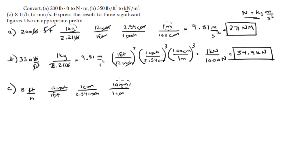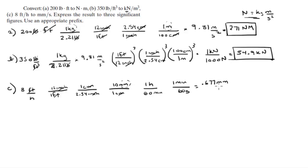Now convert the hour to seconds: in one hour there are 60 minutes, and in one minute there are 60 seconds. Plugging all these numbers in, you get 0.677 millimeters per second — that's the final answer for C, for B, and for A.